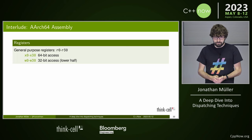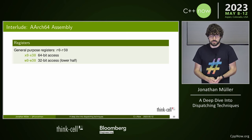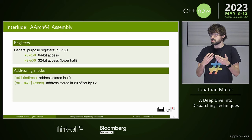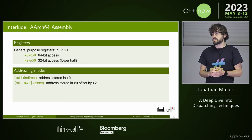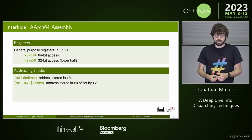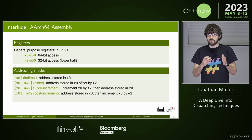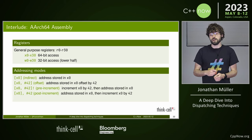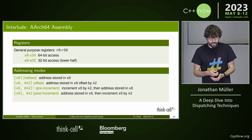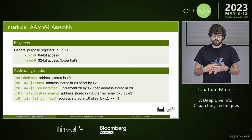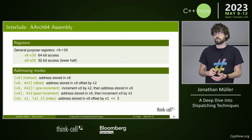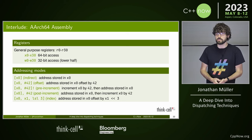On ARM64 we have registers x0 to x30 that are 64-bit; we can access the lower 32-bit half using w instead of x. For memory access, a register holding an address can be dereferenced by putting it in square brackets — essentially a pointer dereference. We can also dereference with an offset in bytes. We have pre-increment and post-increment operations which add the offset and either read before or after the increment. For indexing into an array of 8-byte objects, we can specify a left shift by 3.